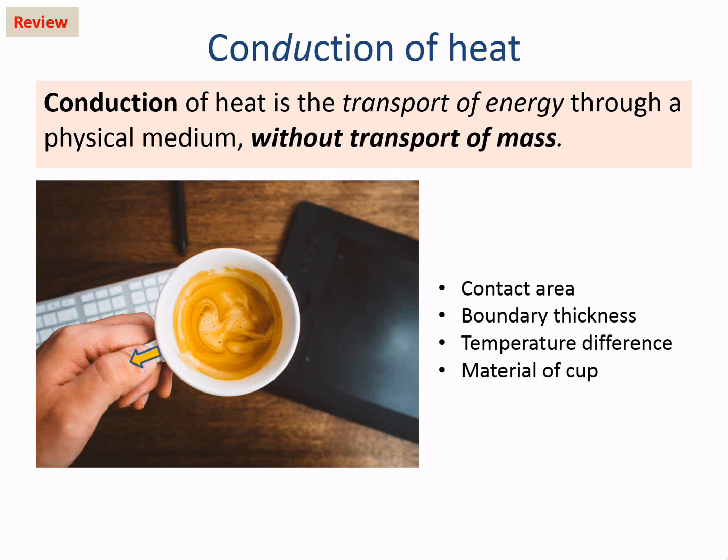In the previous unit we've seen that conduction of heat is the transport of energy through a physical medium without transport of mass. So if we had enough information on the contact area between the objects that are exchanging heat, their temperature difference, the thickness of the boundary between them, and so on, we would be able to answer the question: how quickly does the heat flow from one object to the other?